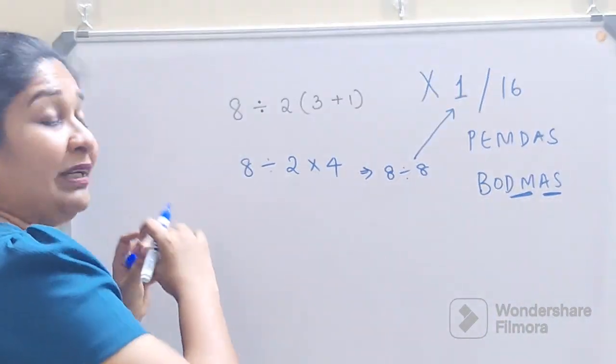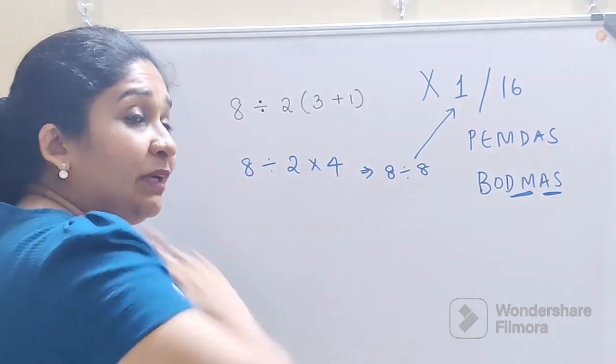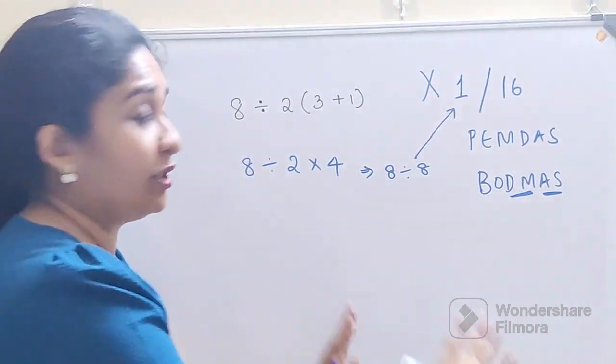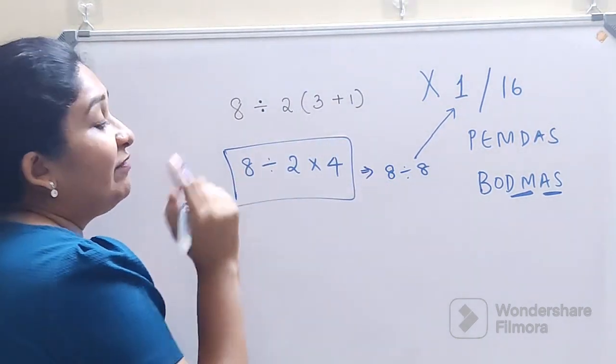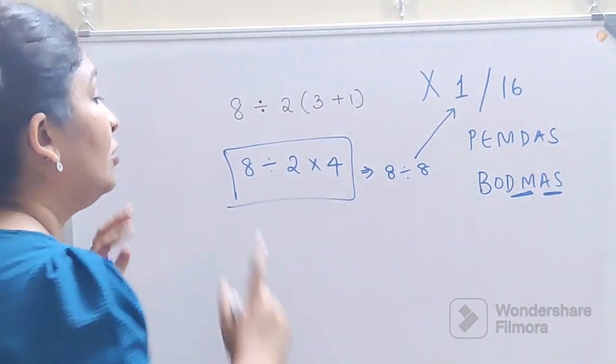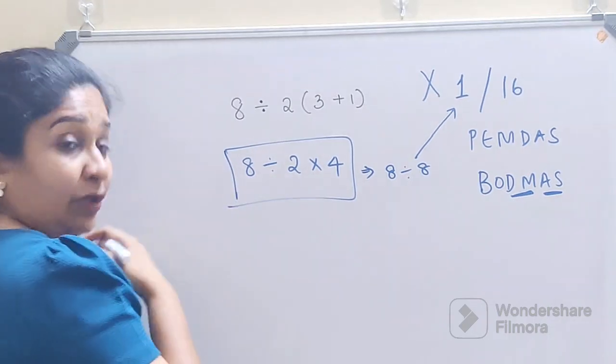When it comes to an equation where it just has multiplication and division or where it just has addition and subtraction, so now in this particular scenario I can say we just have division and multiplication. So what we will do is we will go from left to right.